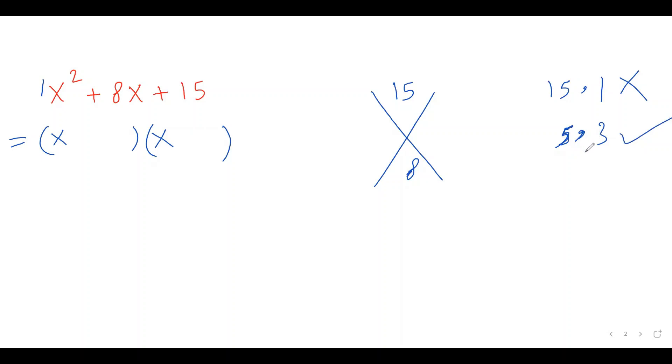And all I need to do is to plug in those two numbers into this bracket. So x plus 5 is one of them, and plus 3 is the other one. So, this is the factored form of this quadratic equation.